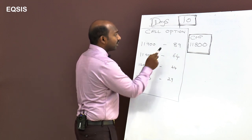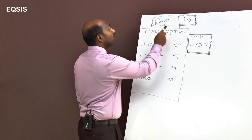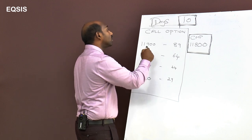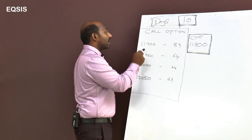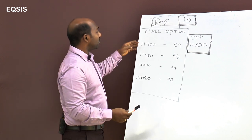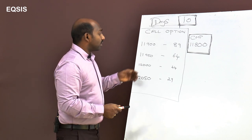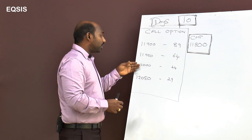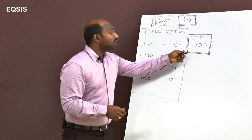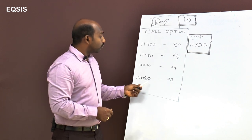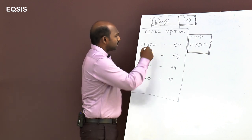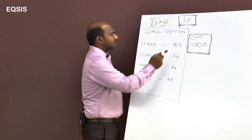When the underlying is at 11800, the 11900 strike is trading at 89 because with 10 days to go, it's quite easy for the market to climb above 11900. That's why it carries 89 as premium. Compared to that, 11950 carries less, 12000 carries even less, and 12050 carries the least — because the chances of the market going beyond 12050 from 11800 are much less likely.